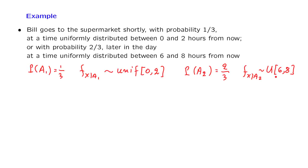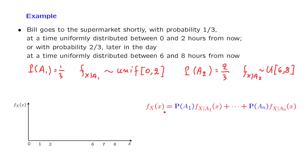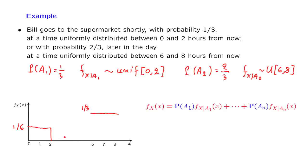By the total probability theorem for densities, the density of x — the time at which Bill goes to the supermarket — consists of two pieces. One piece is a uniform between 0 and 2. This uniform would ordinarily have a height of 1/2, but it gets weighted by the corresponding probability of 1/3, so we obtain a piece with height 1/6. Under the alternative scenario, the conditional density is a uniform on the interval between 6 and 8, which has height 1/2, but gets multiplied by 2/3, resulting in a height of 1/3. And this is the form of the PDF of the time at which Bill will go to the supermarket.